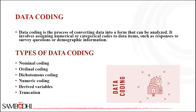Numeric coding involves assigning numerical values to the data items. For example, responses to survey questions about age might be coded as: 18 to 24 years old = 1, 25 to 34 years old = 2, 35 to 44 = 3, and so on.